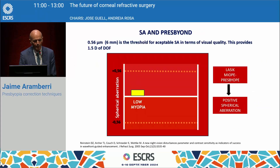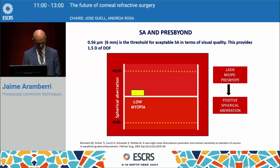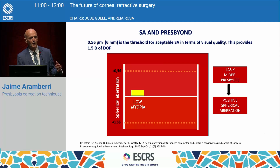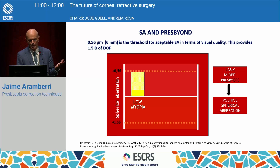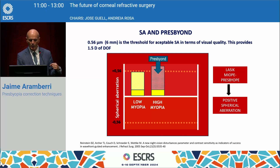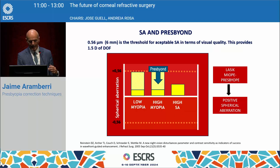Negative spherical aberration works synergistically with any residual accommodation that is still working in the early 50s or late 40s, plus the miosis. So the level of spherical aberration to reach some near vision will be lower in the negative part. PresbyOn puts the threshold at 0.56 microns for 6 mm — that's the acceptable spherical aberration. If myopia is corrected and you are driving spherical aberration to the positive side, PresbyOn will do nothing or a very small correction because naturally the refraction correction will produce spherical aberration up to that number. If it's higher myopia, PresbyOn will correct some of that spherical aberration until it reaches an acceptable number.